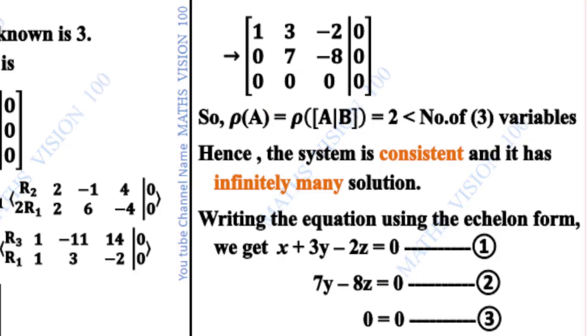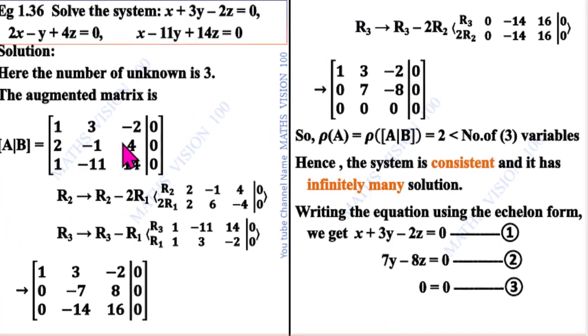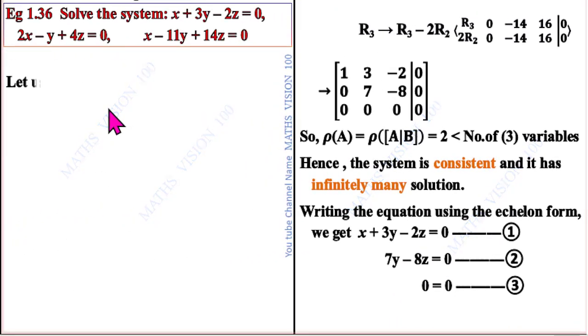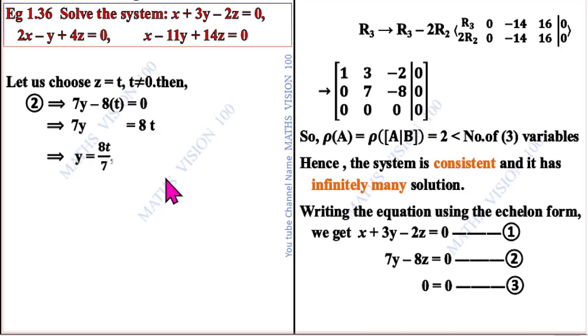Let us choose z equals t, where t equals 0 or any value. From equation 2, 7y minus 8t equals 0, so y equals 8t divided by 7.